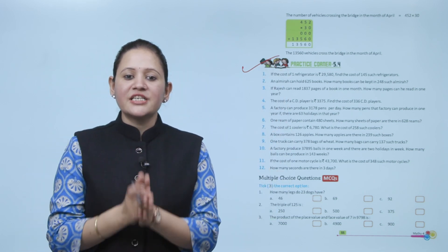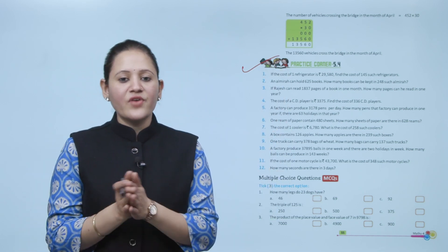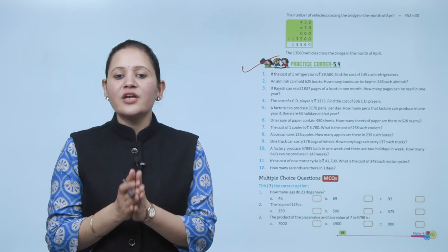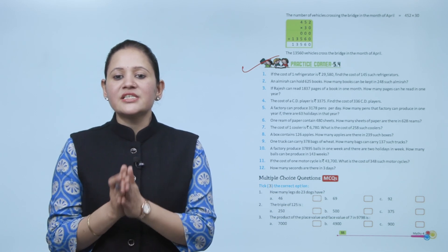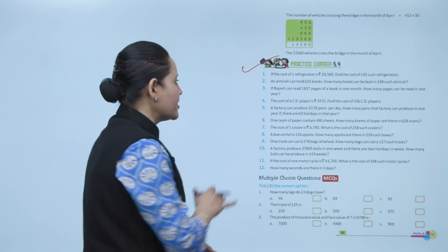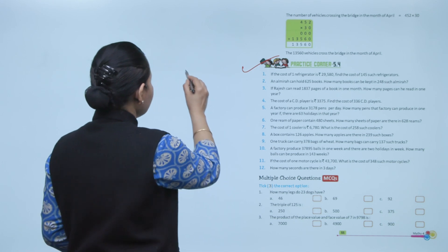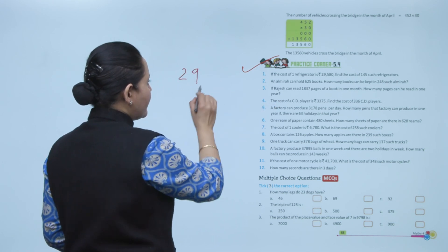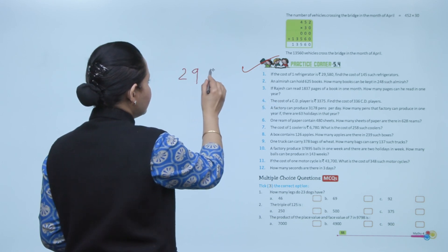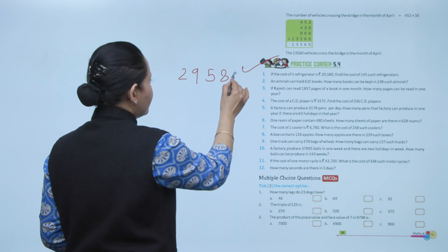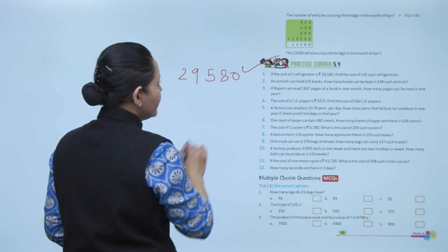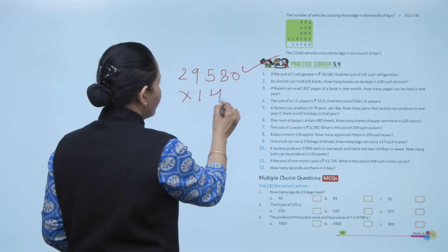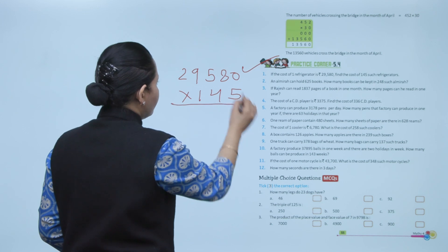Next is practice corner 5.4. A refrigerator costs 29,580 rupees. Find the cost of 145 such refrigerators. For this, multiply the cost of one refrigerator, 29,580, by 145.